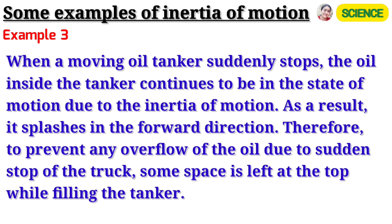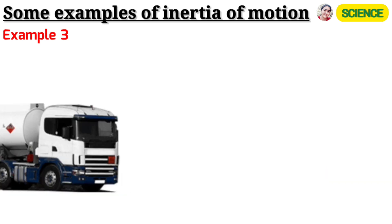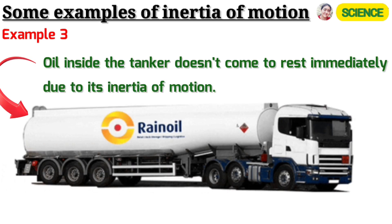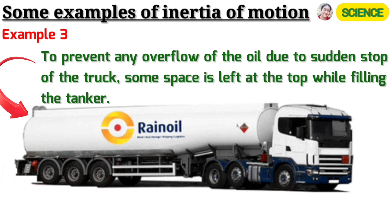Example 3: When a moving oil tanker suddenly stops, the oil inside the tanker continues to be in the state of motion due to the inertia of motion. As a result, it splashes in the forward direction. Therefore, to prevent any overflow of the oil due to sudden stop of the truck, some space is left at the top while filling the tanker.